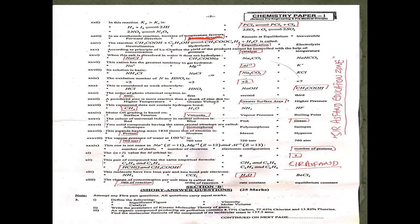Powdered zinc is more reactive than a large chunk of zinc due to greater surface area. This compound does not contain hydrogen bonding — methane is the answer. Hydrogen bonding occurs when hydrogen is bonded to oxygen, fluorine, or nitrogen. Motor oil grading is done on the basis of viscosity.